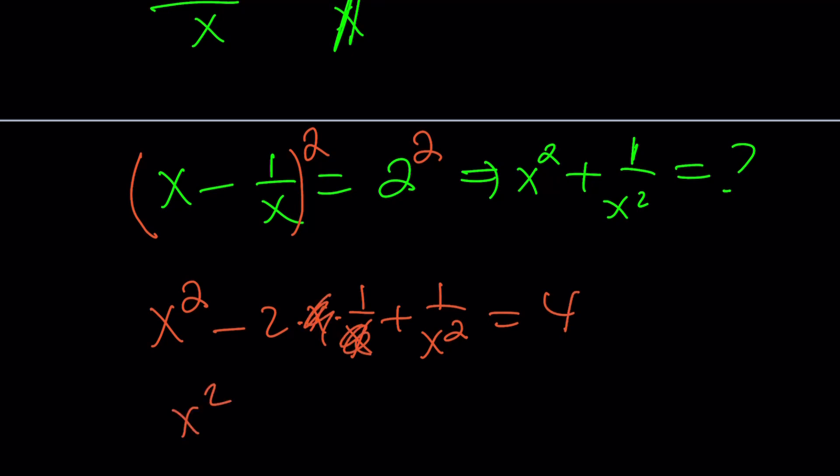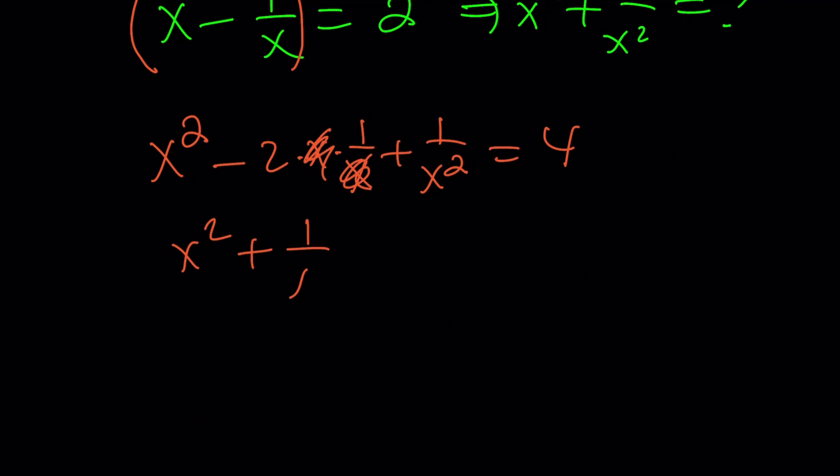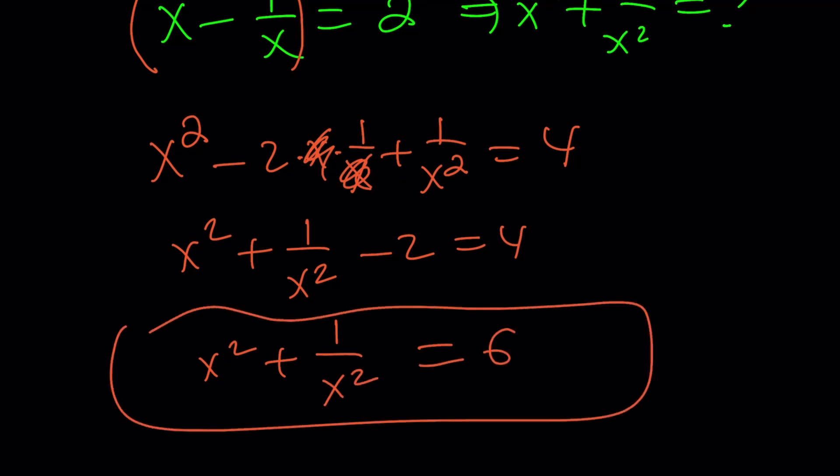We get x squared plus 1 over x squared minus 2 equals 4, which means x squared plus 1 over x squared is equal to 6. And that happens to be the answer. Like before. Great.